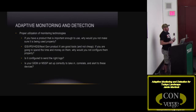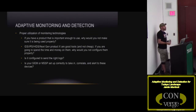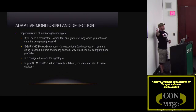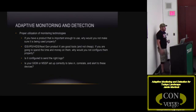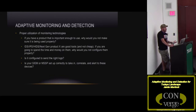So, adaptive monitoring and detection. We spend millions on technology — and most of that money is actually finally going towards security. It's important to not only have this technology, but you need to configure it correctly and monitor it correctly. If you have a product that's important enough that you spent a lot of money on it, why would you not make sure that you're using it properly?